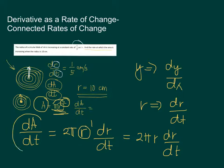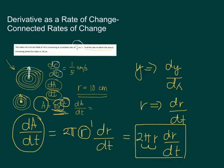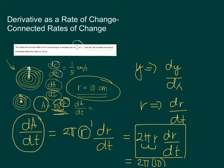To compute how fast the area is changing with respect to time, we apply the formula: 2π times the given radius. Since we want the rate of change in area when the radius equals 10, r = 10. For dr/dt, we have the value from before: dr/dt = 1/5 centimeters per second. So this is replaced by 1/5.